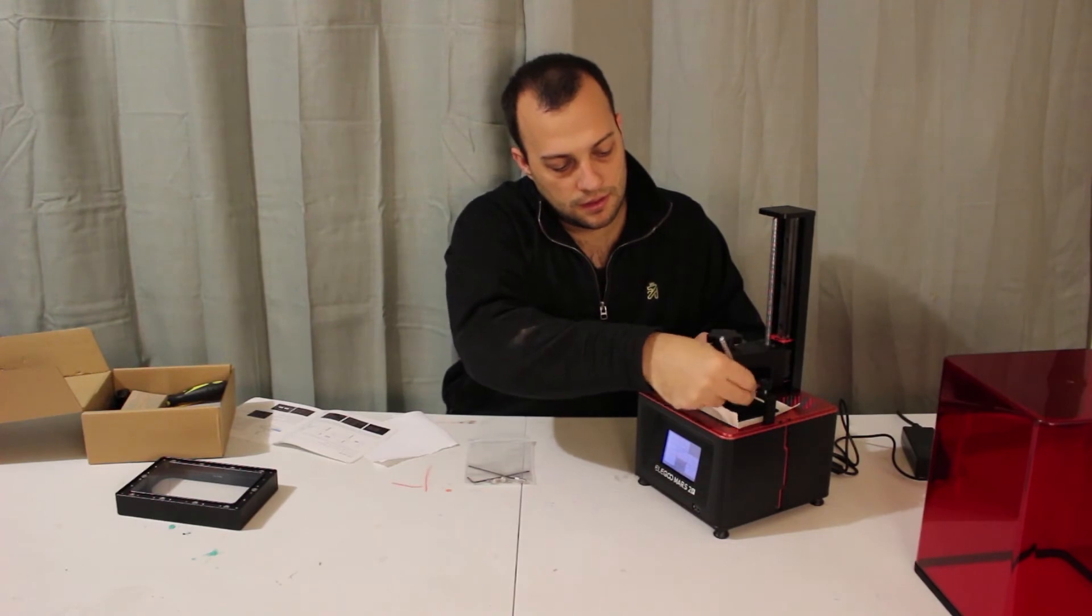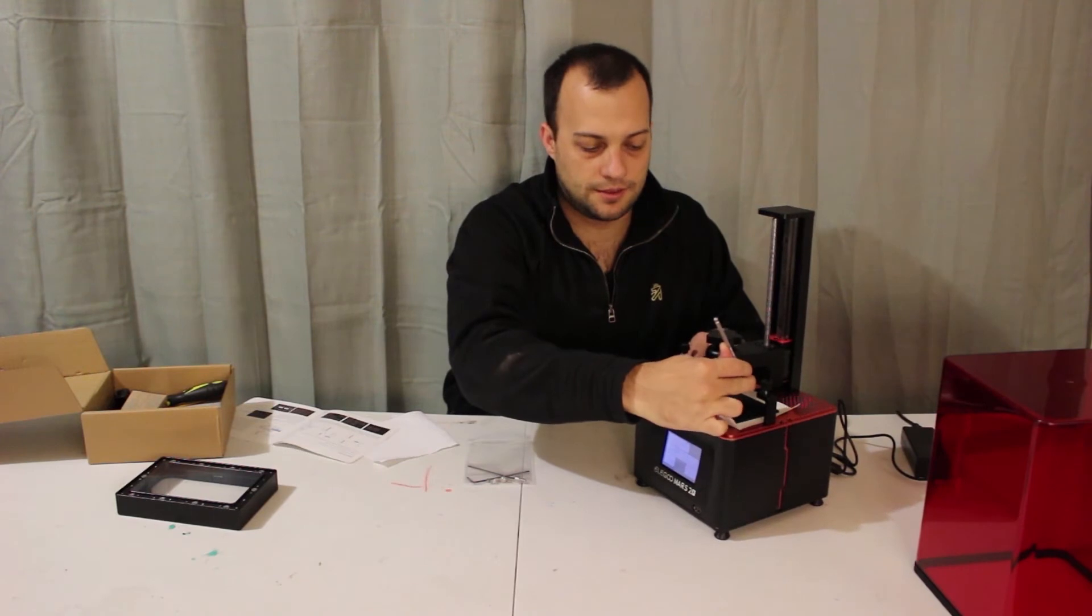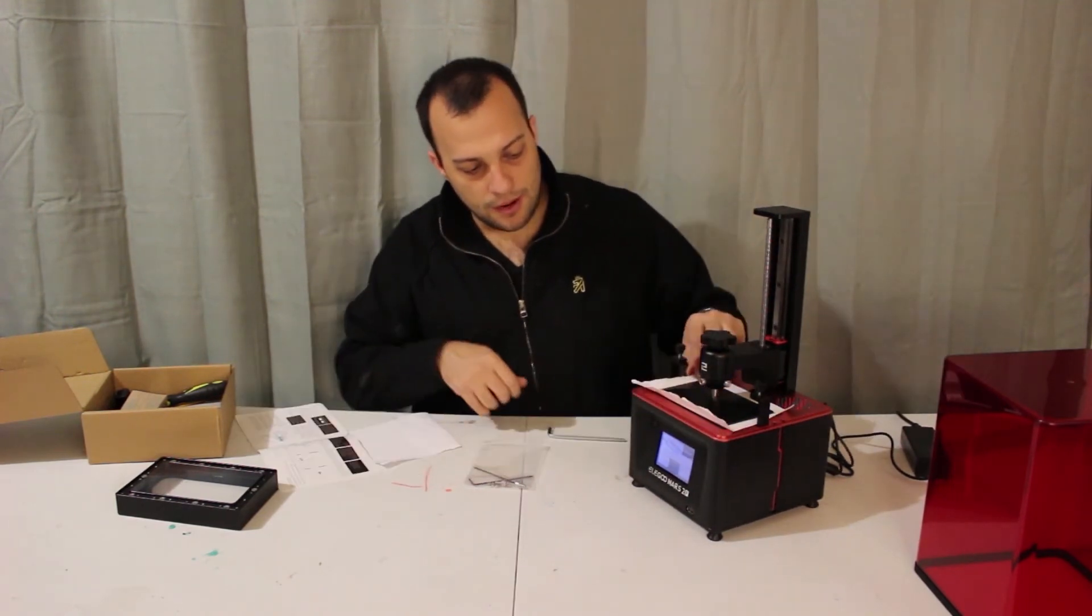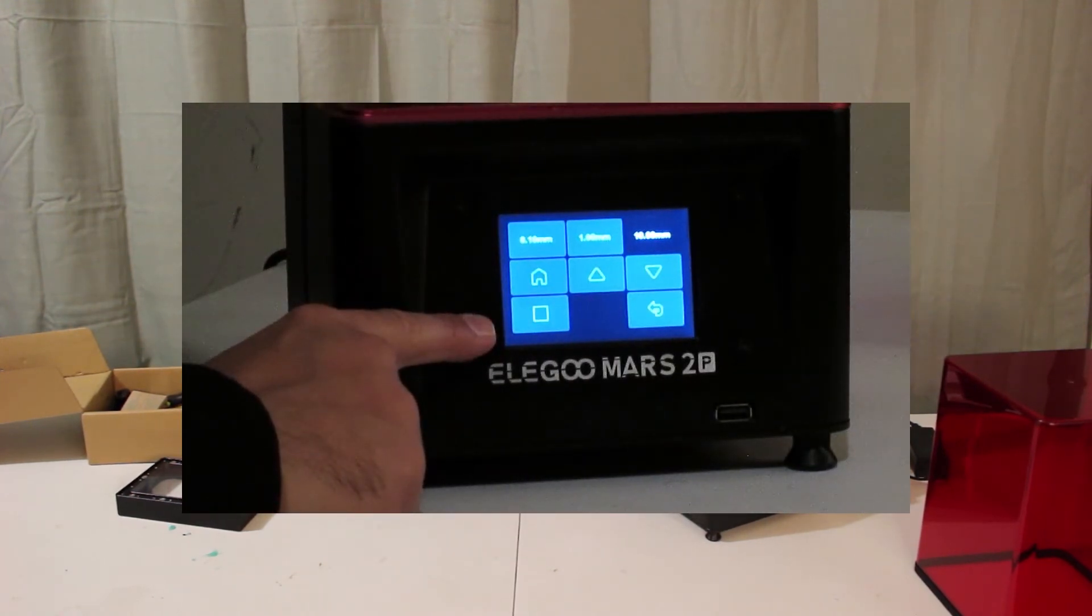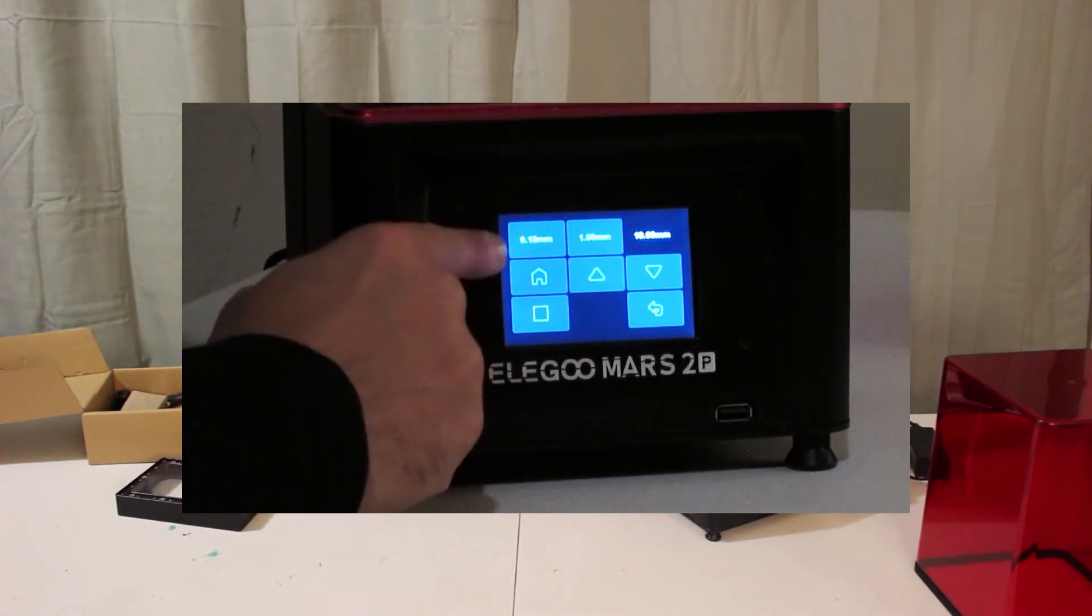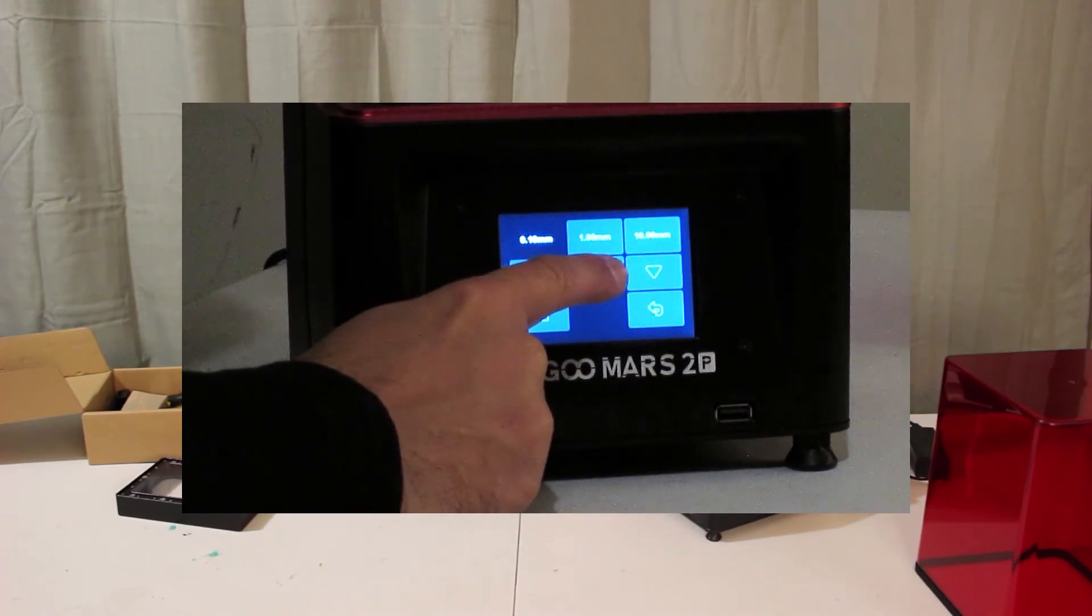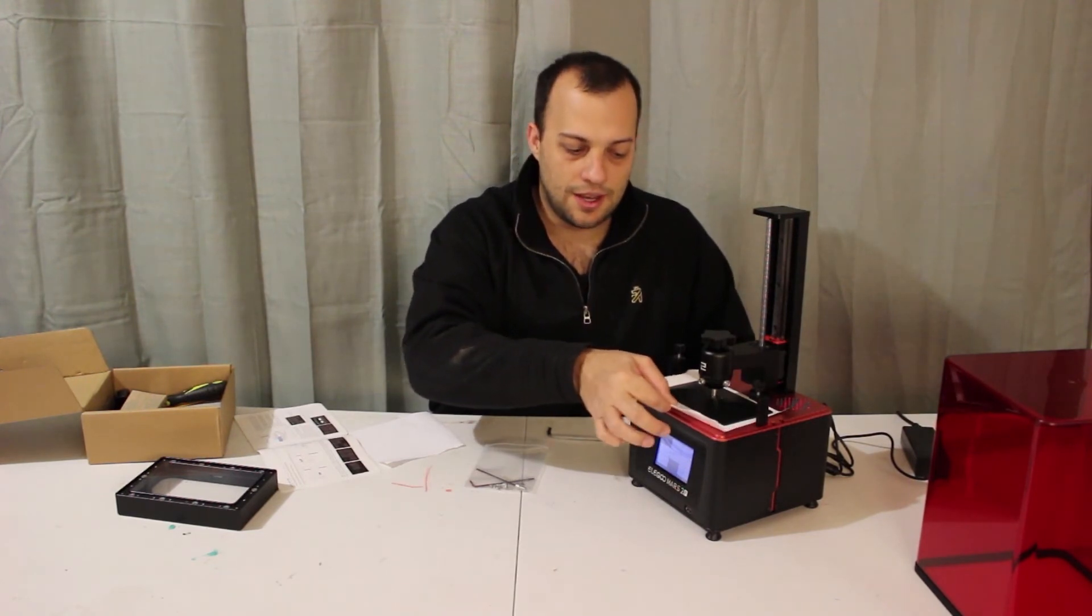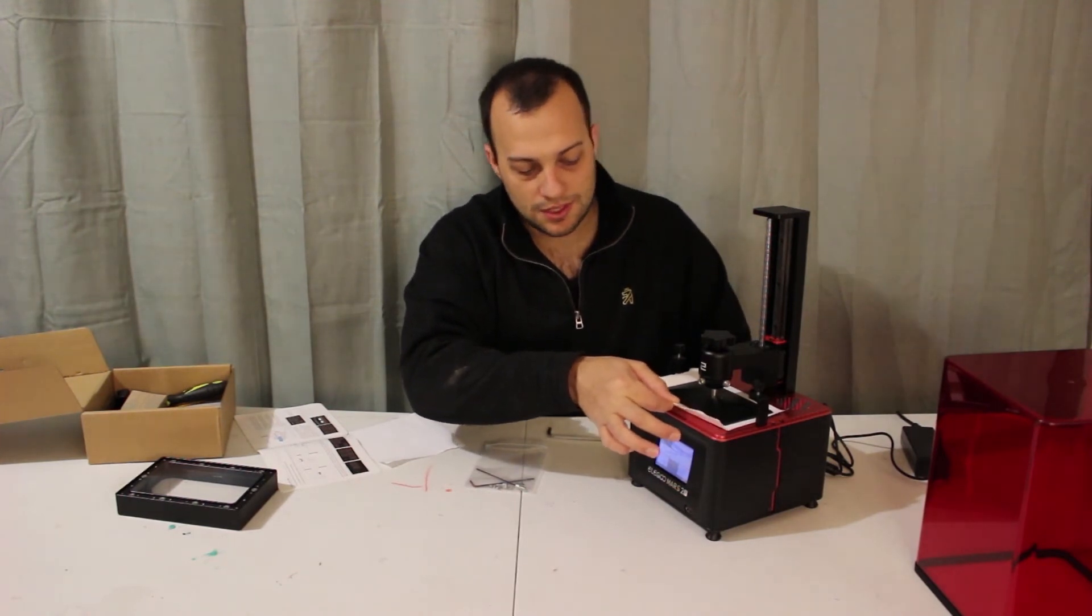Now that we've got it nice and tight, it should be leveled. I can't tighten it anymore, so that's good. Now we want to check to see if the paper slides out, which it doesn't. So what we'll do is we're going to go ahead and adjust that. We're going to select the 0.1mm and hit the up arrow to go up. Now, without effort, it slides very easily, which is good. This is exactly what we want.